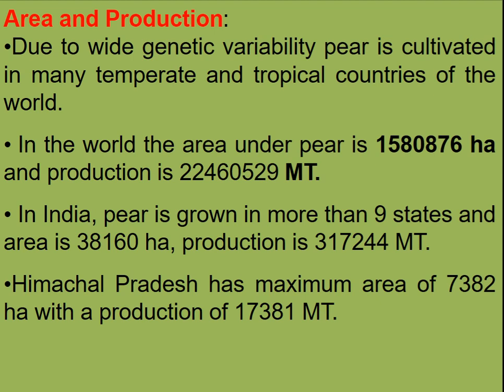In the world, the area under pear is 15,80,876 hectares and production is about 22,46,529 metric tons. In India, pear is grown in more than nine states with an area of 38,160 hectares and production of about 3,17,244 metric tons. In Himachal Pradesh, the maximum area is 7,382 hectares with production of 17,381 metric tons.